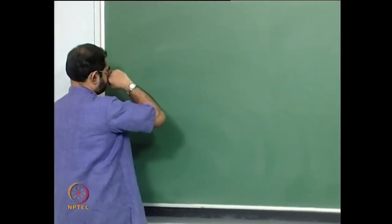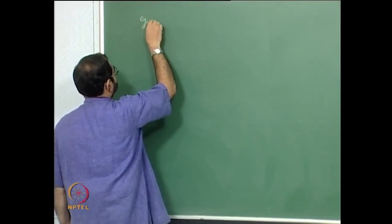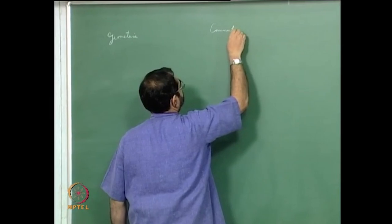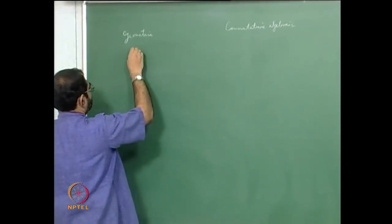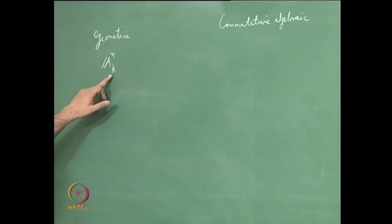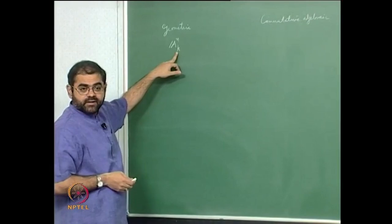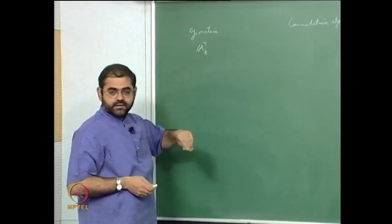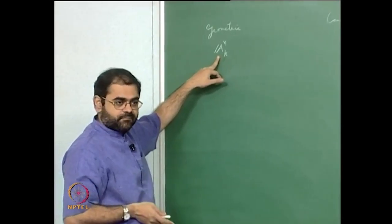We have as usual the geometric side and on the other side the commutative algebraic side. On the geometric side, if you take affine n-space over k, this is just k^n given the Zariski topology, where k is algebraically closed. You can always think of it as complex numbers if you want to be concrete — so this will be just C^n, n copies of C, given the Zariski topology.